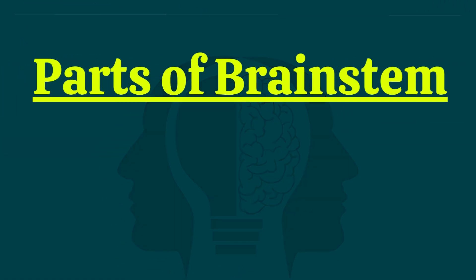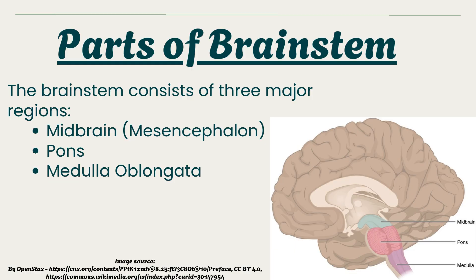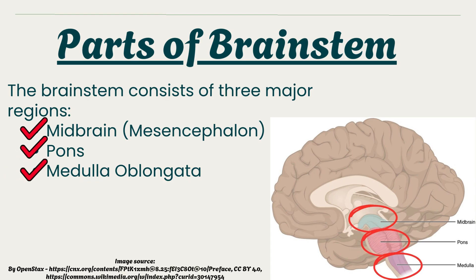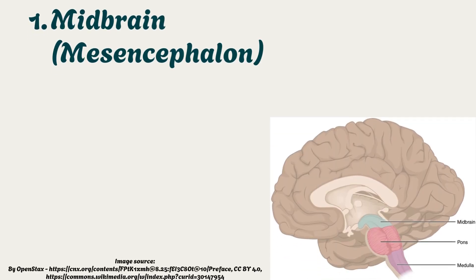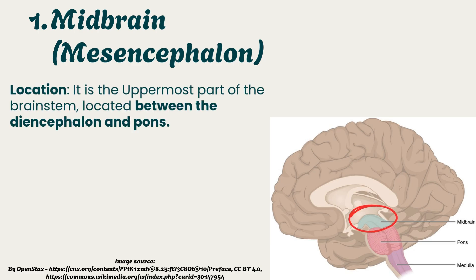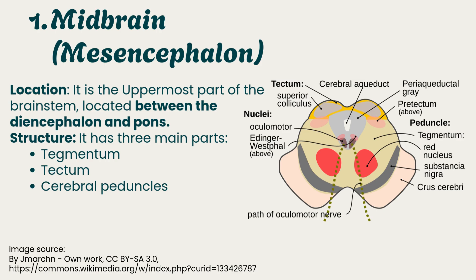The brainstem consists of three major regions: the midbrain (also known as the mesencephalon), the pons, and the medulla oblongata. The midbrain is the uppermost part of the brainstem, located between the diencephalon and pons. Its three main structural parts are the tegmentum, tectum, and cerebral peduncles.